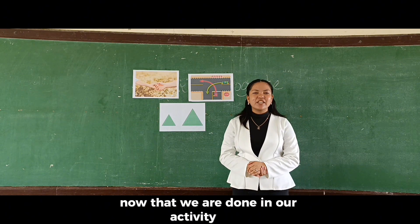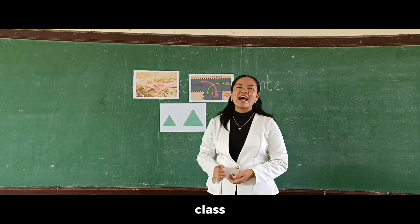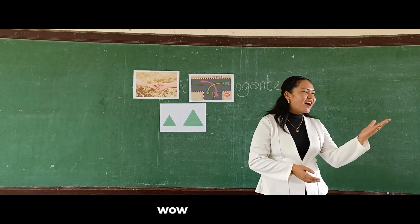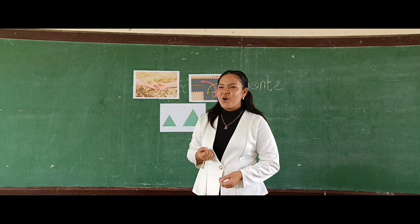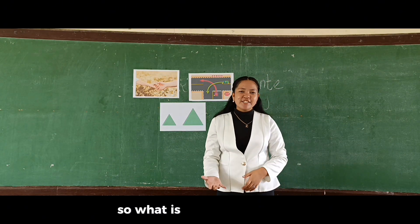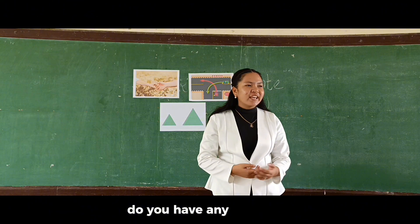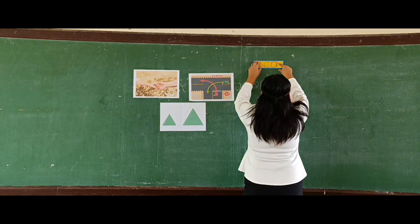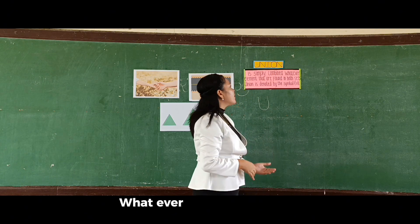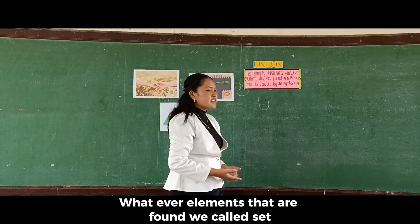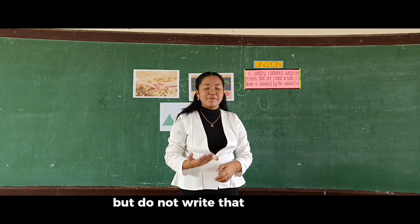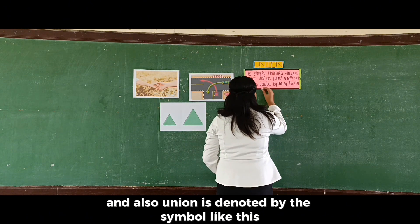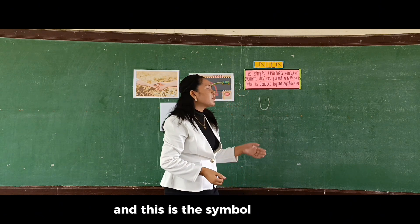Now that we are done with our activity, class, what do you think is our topic for today's afternoon class? Alright, any idea? Wow, that's great. What else? Wow, that's good. Okay, so what is union, class? Anyone? Do you have any idea? So, union is simply combining whatever elements that are found in both sets. But do not write the repeated numbers more than once. Union is denoted by the symbol like this.